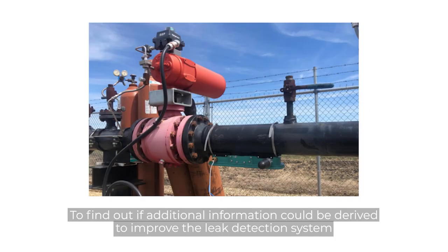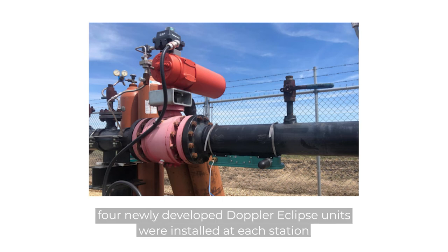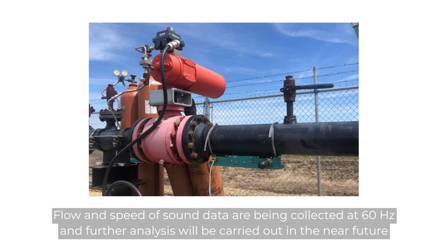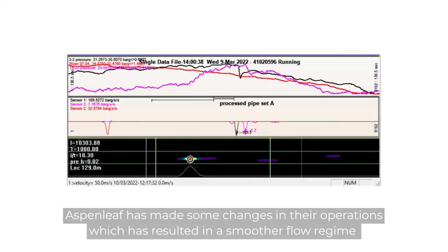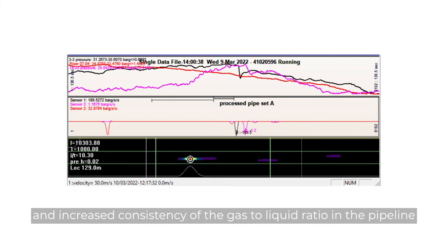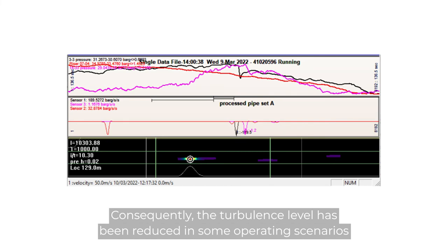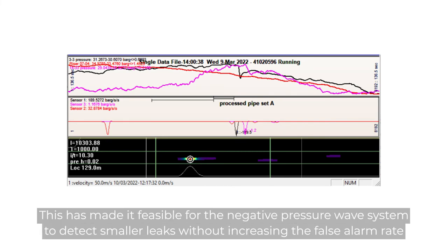To find out if additional information could be derived to improve the leak detection system, four newly developed Doppler Eclipse units were installed at each station. Flow and speed of sound data are being collected at 60 Hz and further analysis will be carried out in the near future. This photo shows the installation of an Atmos Doppler Eclipse at station 4. Aspen Leaf has made some changes in their operations, which has resulted in a smoother flow regime and increased consistency of the gas-to-liquid ratio. Consequently, the turbulence level has been reduced in some operating scenarios, making it feasible for the negative pressure wave system to detect smaller leaks without increasing the false alarm rate. This figure shows an example of a smaller leak being detected.